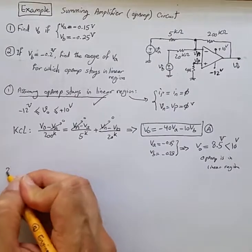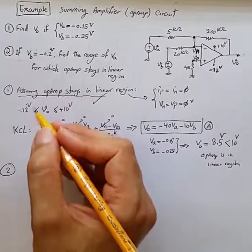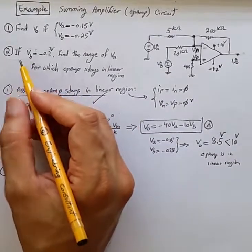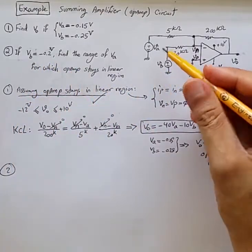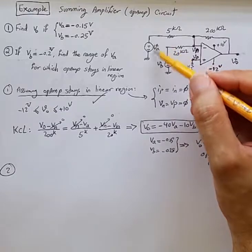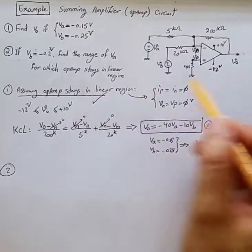So part two: it says if the value of VB is minus 0.2 volts, find the range of values of VA for which the op-amp stays in linear region.